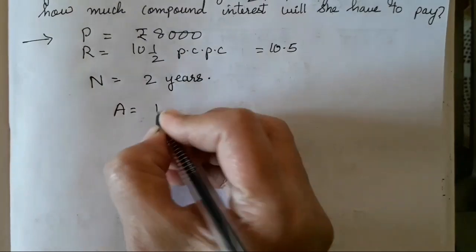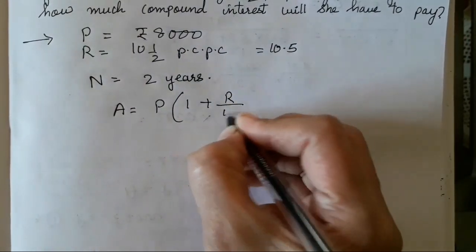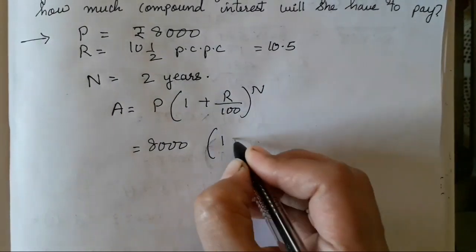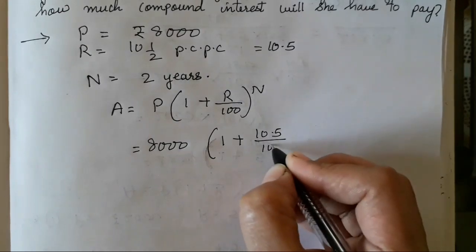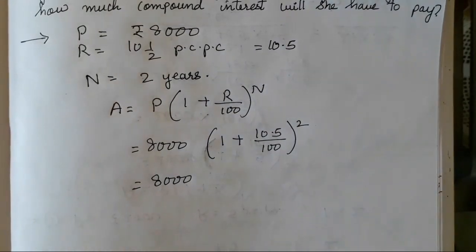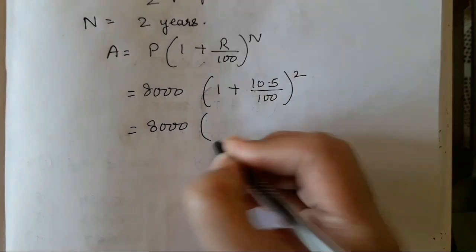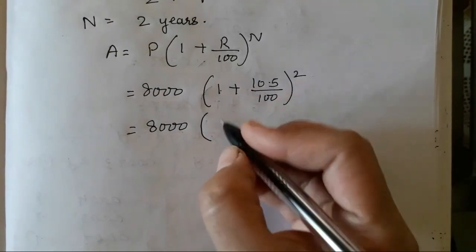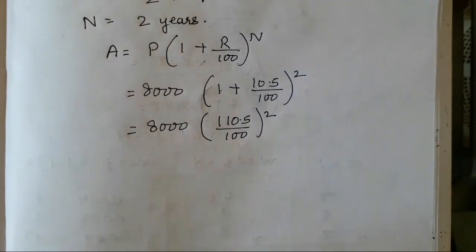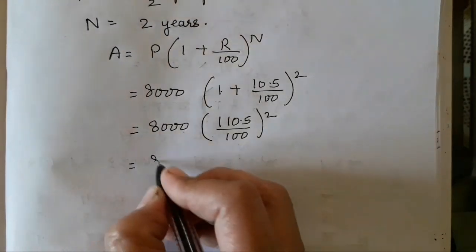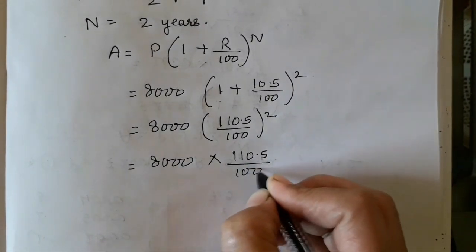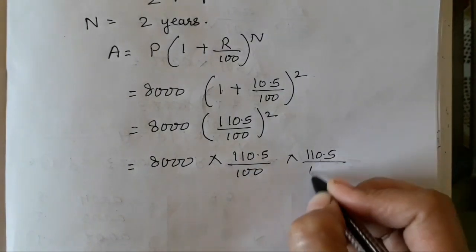I hope this is clear to everyone. Now let's write the formula. A = P(1 + R/100)^N. Where P was 8,000, 1 plus 10.5 upon 100 raised to 2. First we will solve the bracket. That is 8,000 will remain as it is. 100 into 100, 100 plus 10.5 is going to be 110.5 upon 100 raised to 2. Now we don't have to remove the square. What trick we have to use? We have to use it twice. The same answer we are going to get.